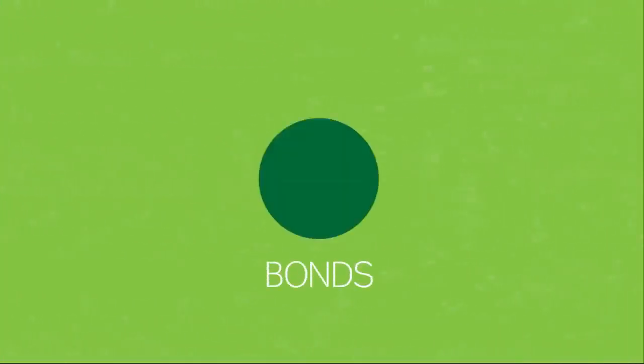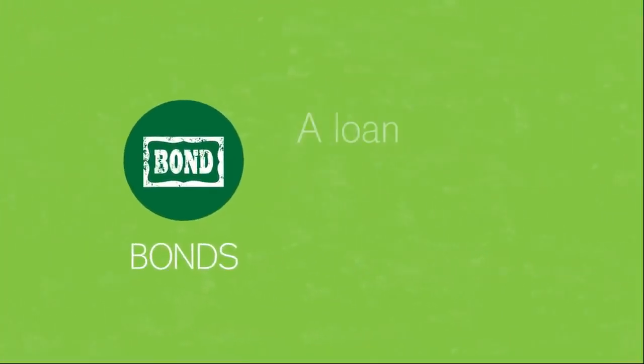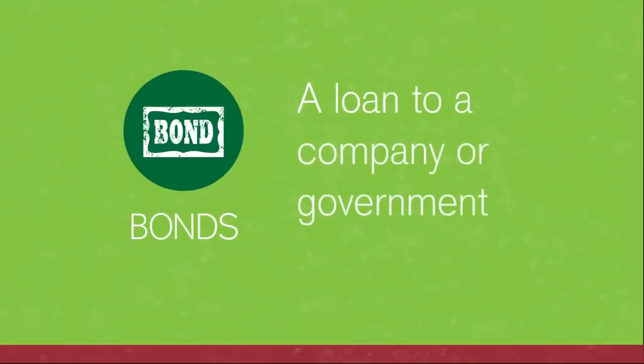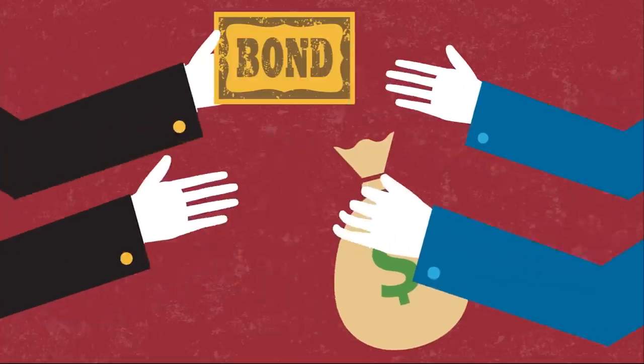Next up, bonds. Bonds are just a loan to a company or government. They borrow by selling a bond, which is simply a promise to repay the buyer in a fixed number of years at a fixed interest rate.